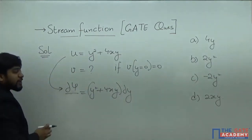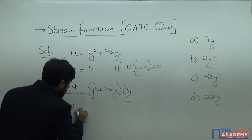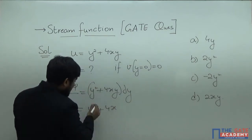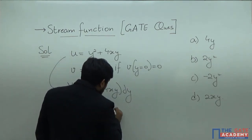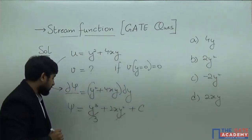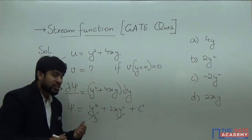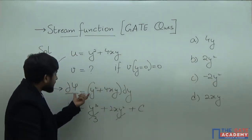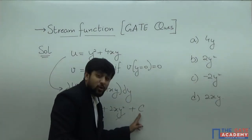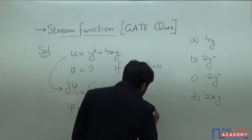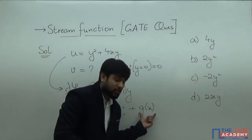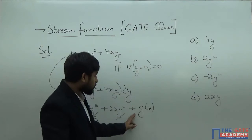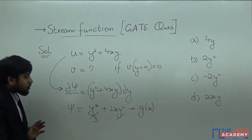Partially integrating with respect to y, psi equals y³/3 plus 4x times y²/2, which is 2xy², plus some function g(x). Note that we write g(x) instead of a constant because when we differentiate partially with respect to y, the partial derivative of g(x) with respect to y becomes zero. So we have the expression for psi as y³/3 plus 2xy² plus g(x).